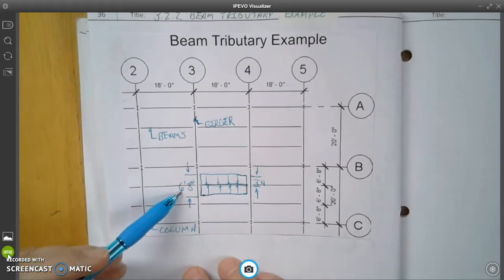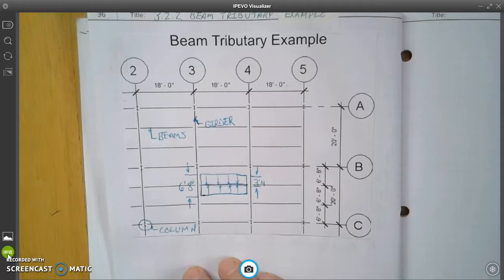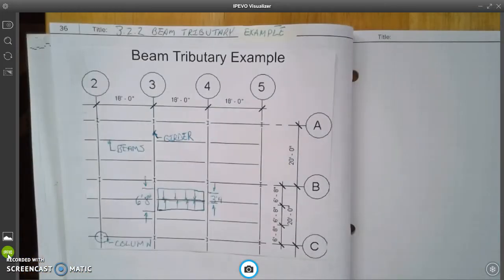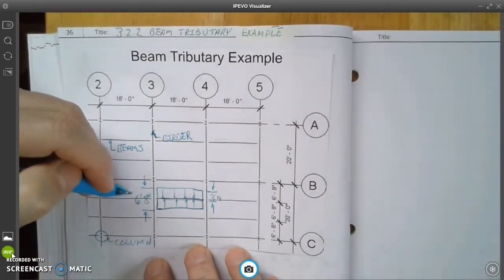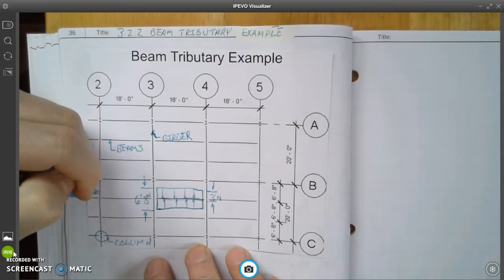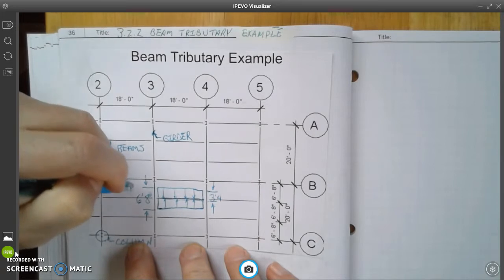So this 6 feet 8 is going to be a number that we're going to be using to calculate the tributary area of that particular beam.